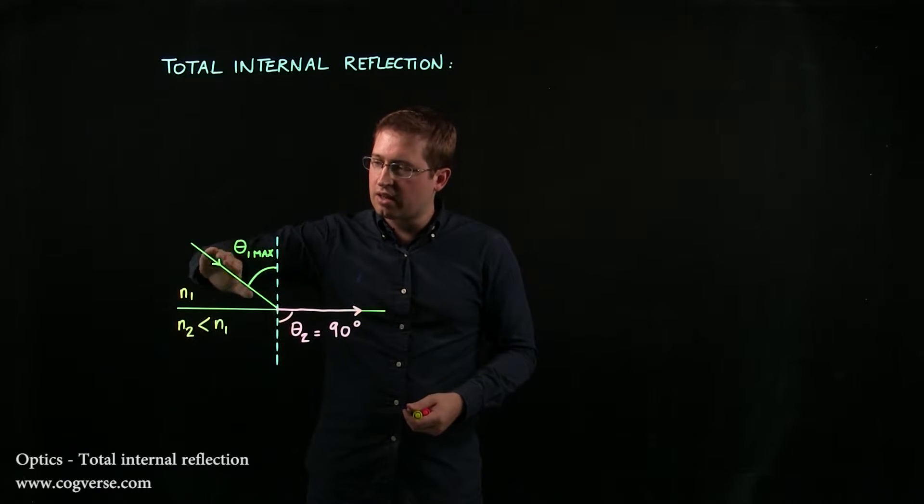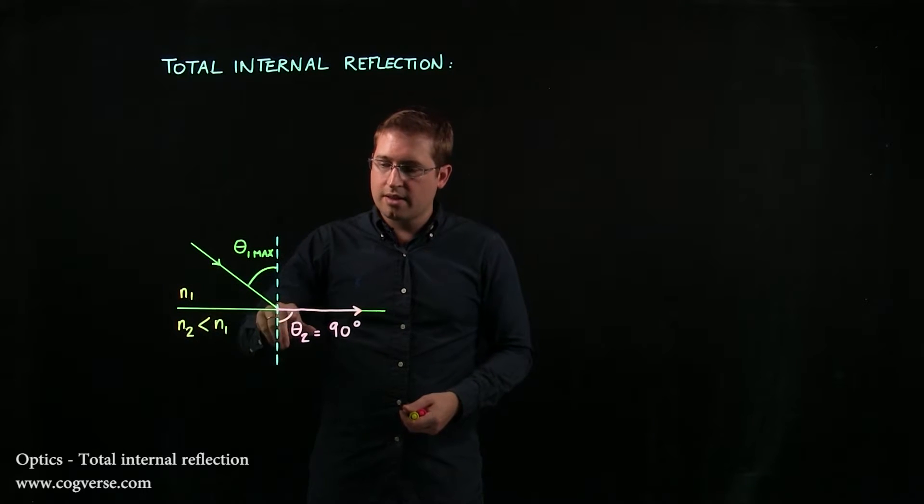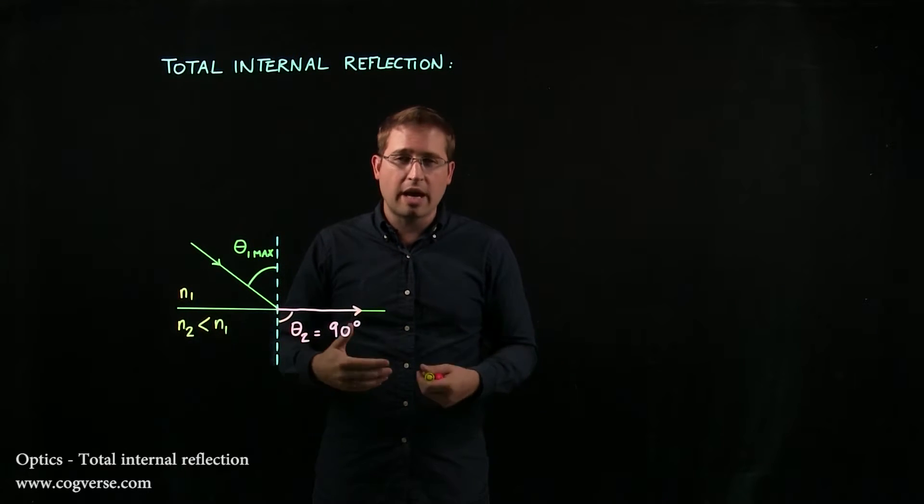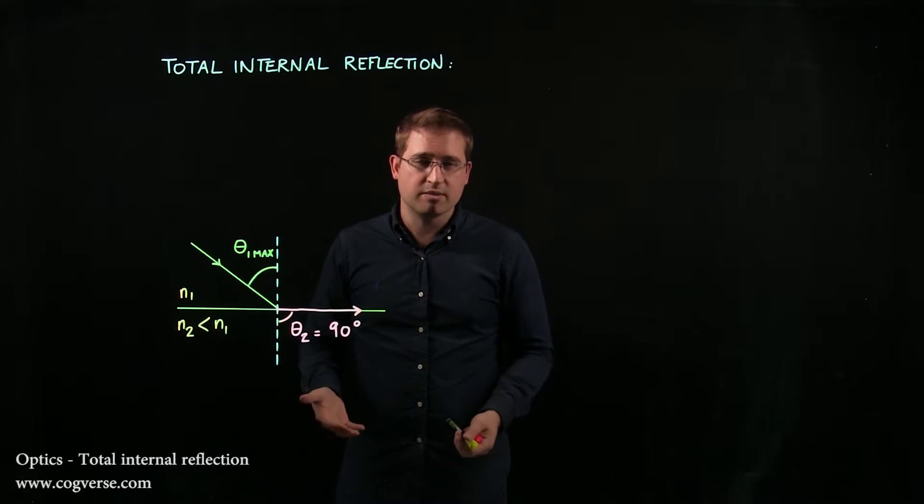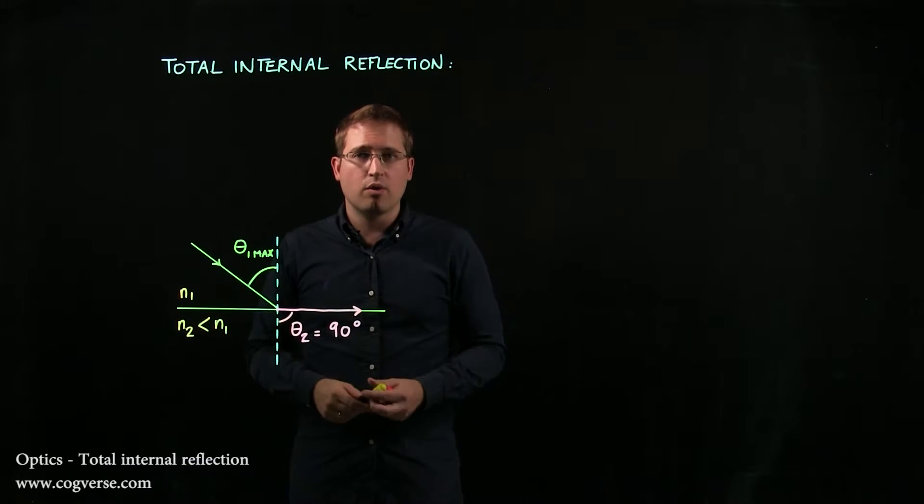If we have anything greater than theta 1 max, then the theta 2 will try to be greater than 90, which is impossible, and there will be no refracted ray.